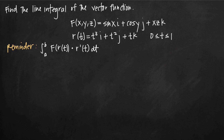In this video, we're going to talk about how to find the line integral of a vector function. In this particular problem, we've been given the function f(x, y, z) = sin(x)·i + cos(y)·j + xz·k, and we've been given a vector function r(t) = t³·i + t²·j + t·k. We've been told that the parameter t stays between 0 and 1.